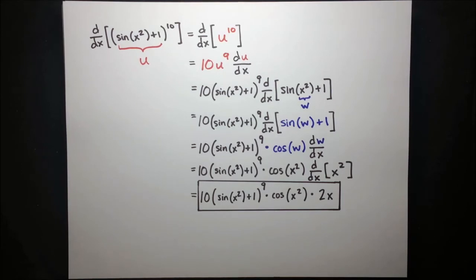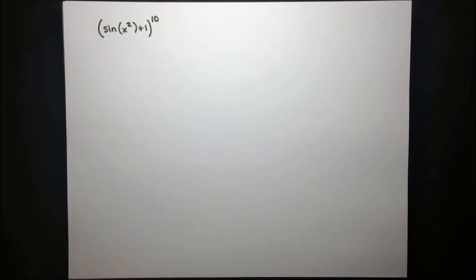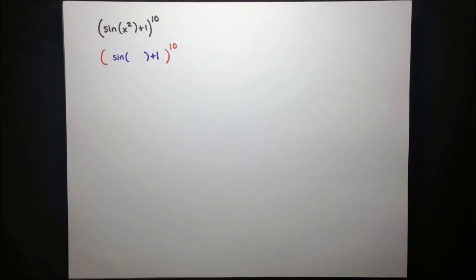This is where the technique of peeling the onion comes in to make life a whole lot easier. Let's look at that same expression — sine of x squared plus 1, to the tenth — but this time think of it in terms of layers. The power of 10 is the outermost layer, sine plus 1 is the middle layer, and x squared is the innermost layer.